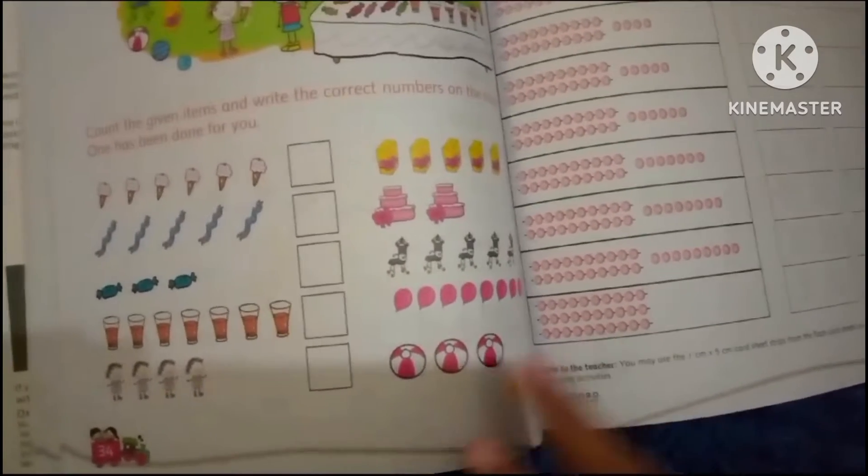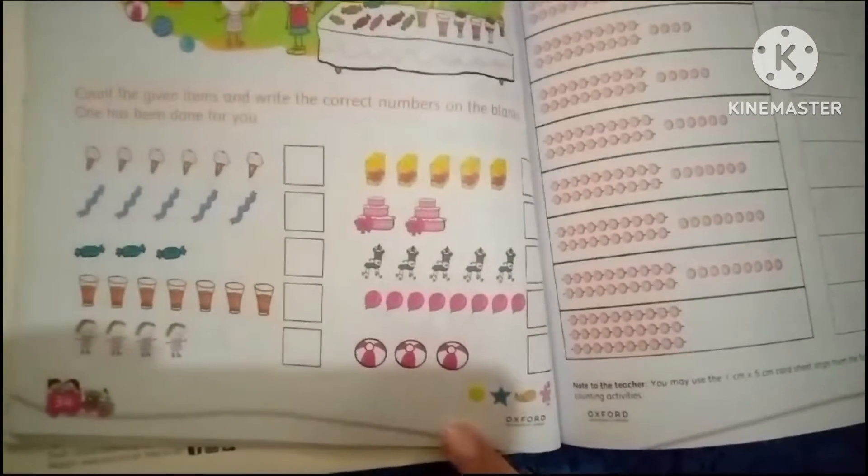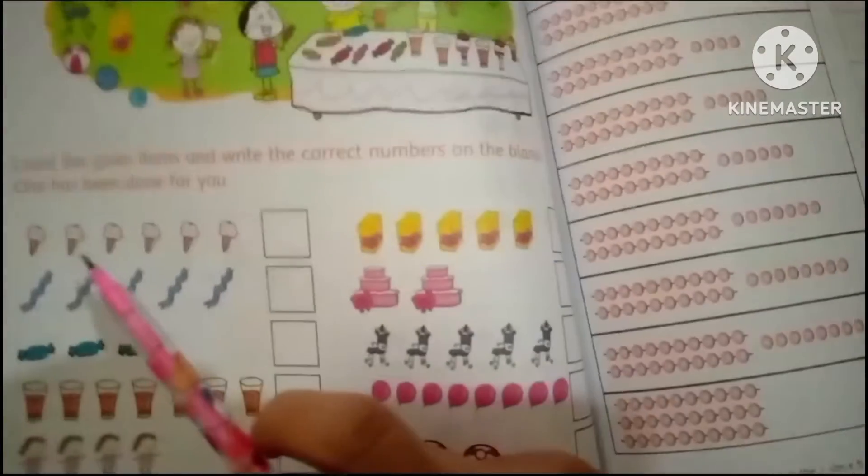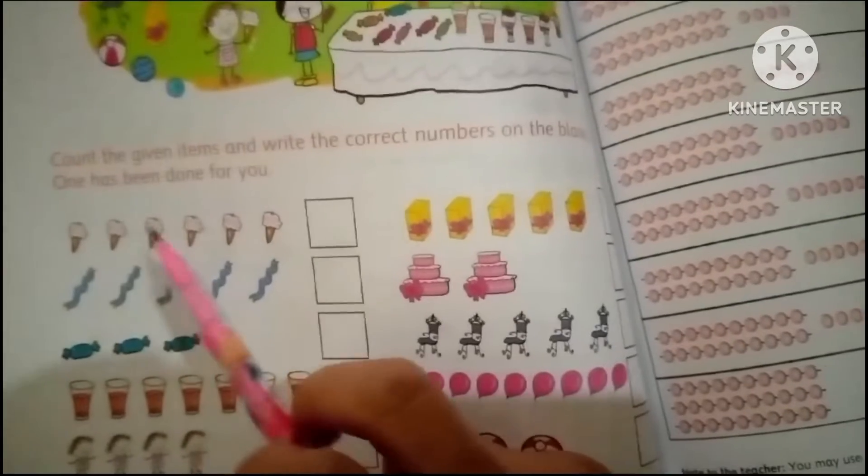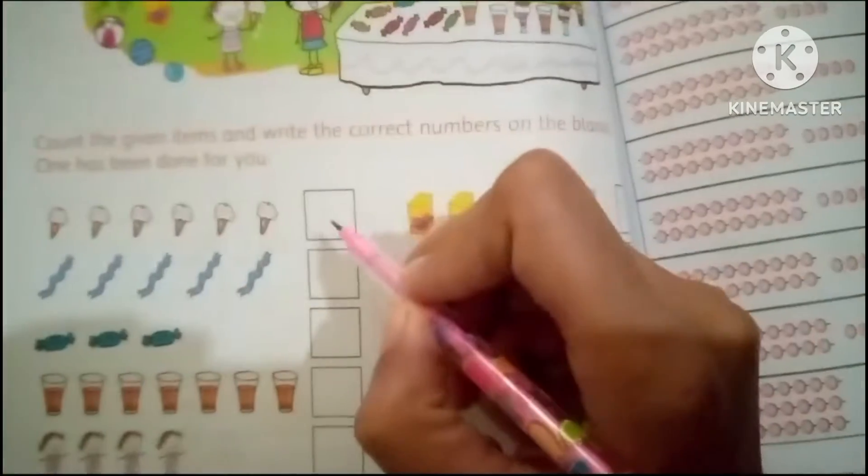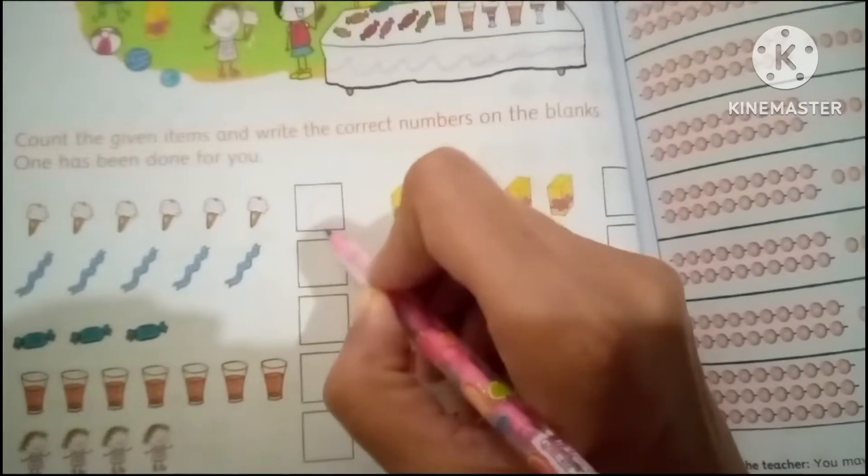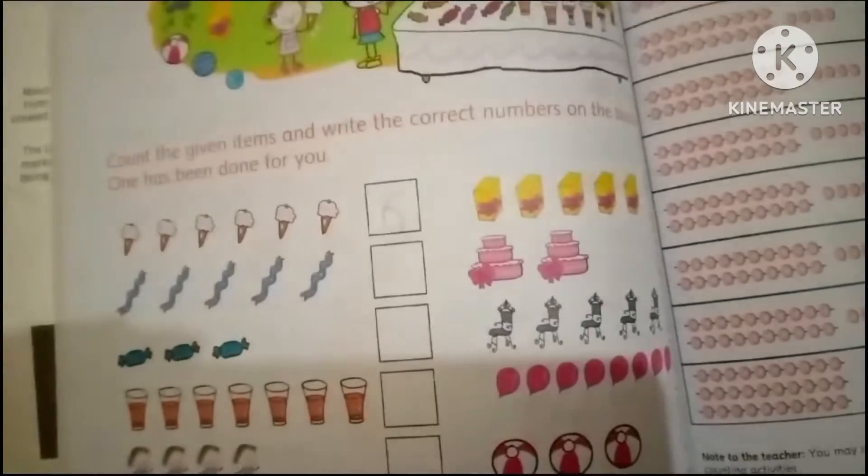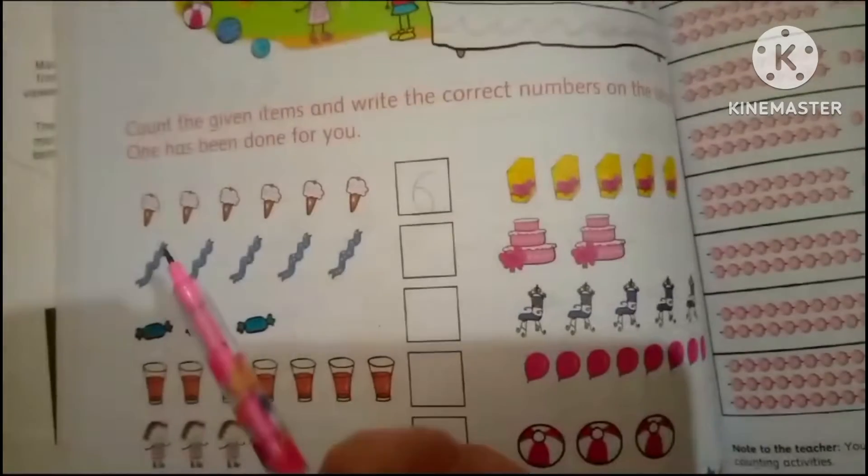Okay, let's count. One, two, three, four, five, six. There are six ice creams. One, two...